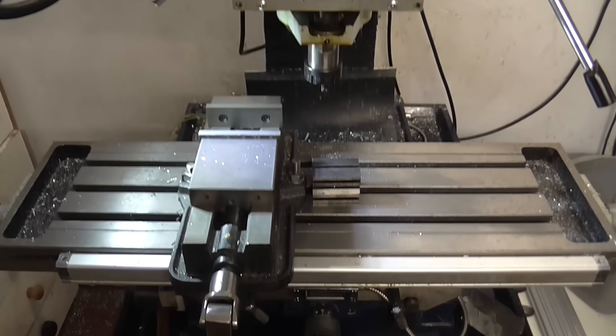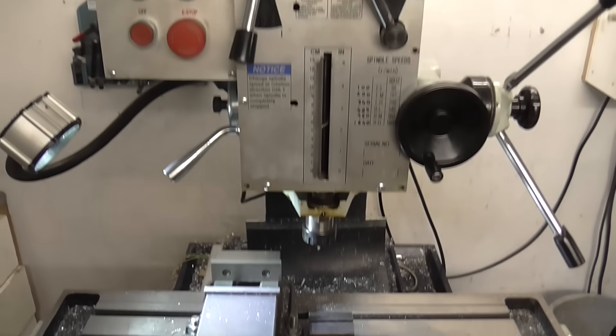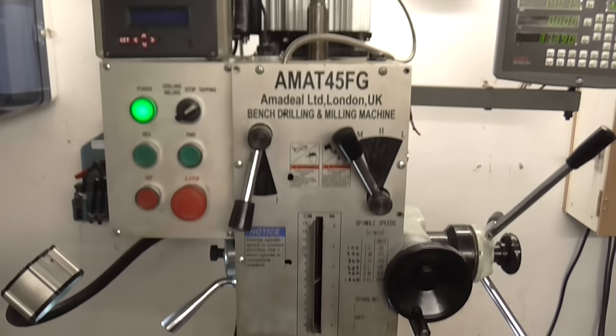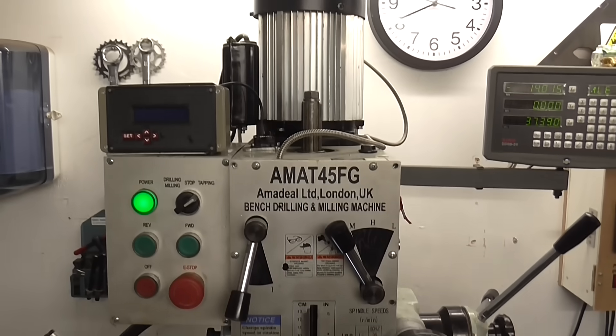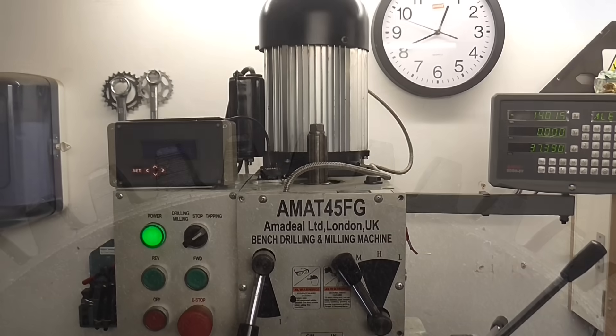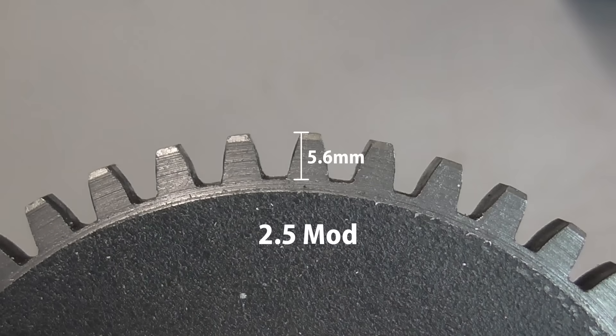My milling machine is 2 horsepower with a geared head. It has quite a lot of torque at low speed. The biggest gears I've made using gear hobbing have been 2.5 mod, and that's really about the limit. I want to cut some gears that are 4 mod, quite a bit bigger.